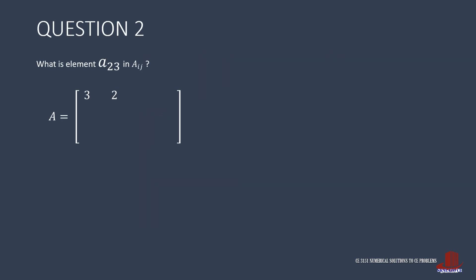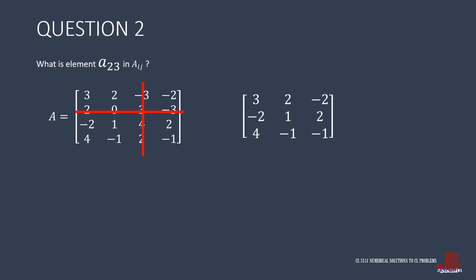Question 2 asks for element A[2,3] of the cofactor of matrix A. Cover row 2 and column 3 to completely eliminate element A[2,3]. The remaining elements are placed in a 3×3 matrix. Take the determinant of the matrix: the main diagonals give 3, 1, and negative 1 as negative 3; 2 times 2 times 4 gives 16; negative 2 times negative 2 times negative 1 gives negative 4. The antidiagonals have 4, 1, and negative 2 giving negative 8; negative 1, 2, and 3 giving negative 6; and negative 1, negative 2, and 2 giving 4.